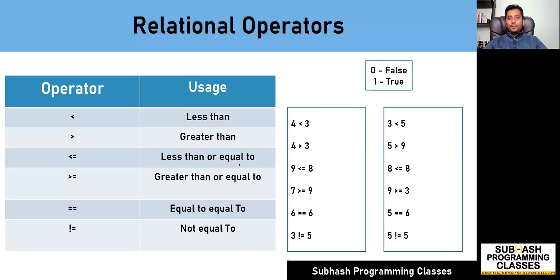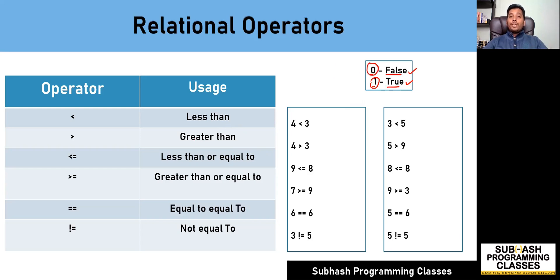What do you mean by relational operators? Relational operators are those operators which when evaluated will result in either a true value or a false value. We must understand that in C language a value of zero is considered as false and a value of one is considered as true. If a given expression evaluates as true then we must consider its result as one, and if any expression results as false then we must consider the result as zero.